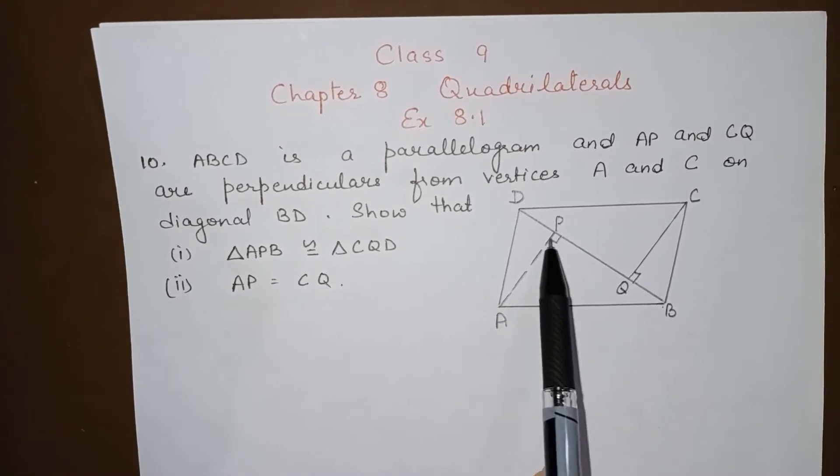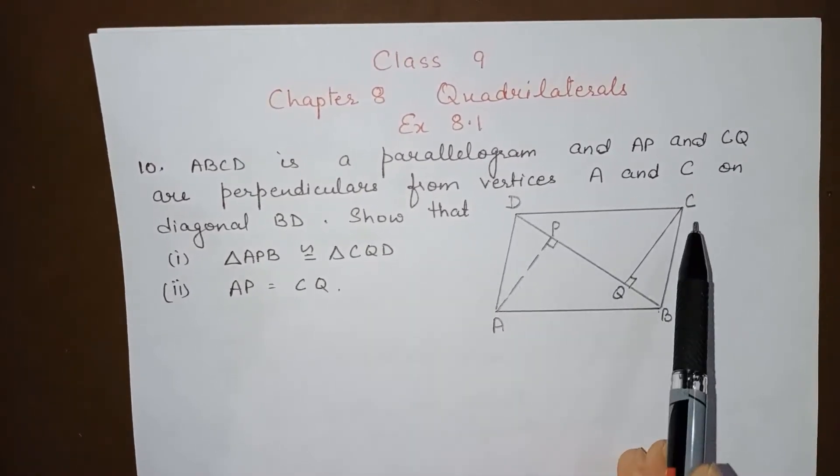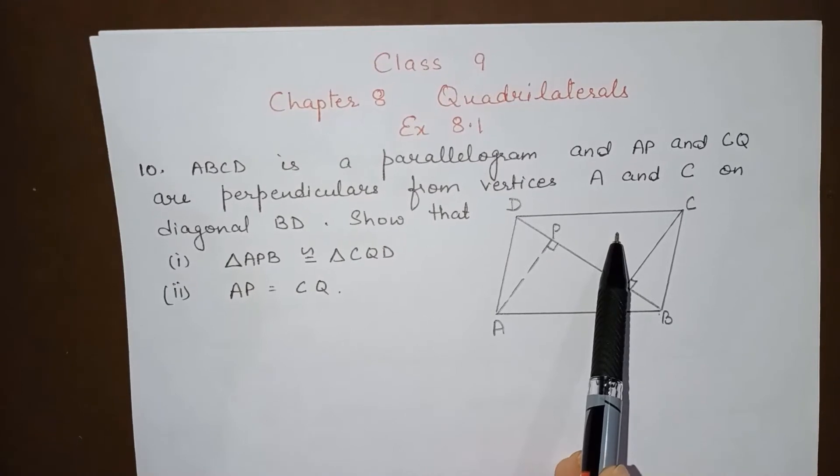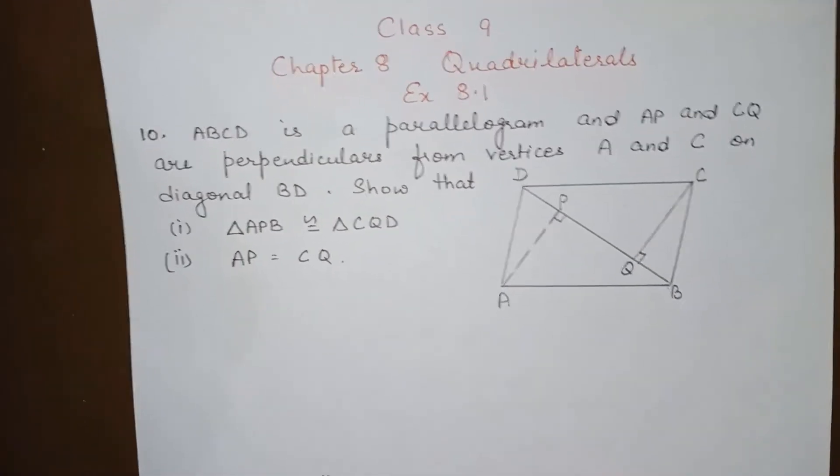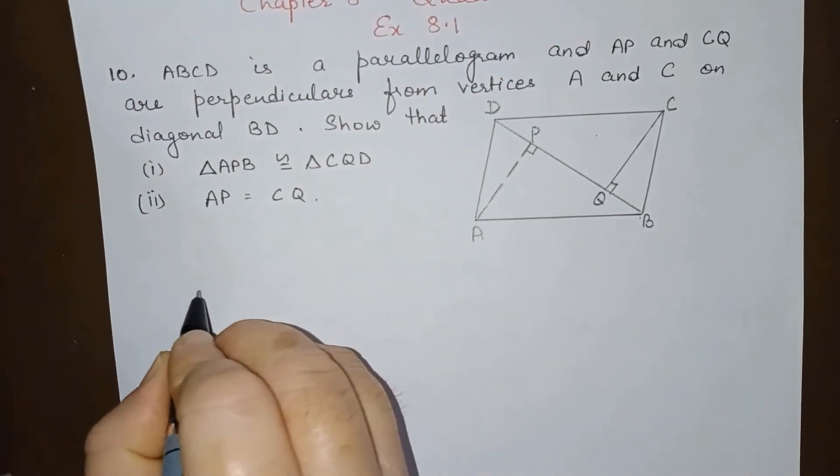This triangle APB and triangle CQD, they are congruent. And then we have to prove that AP is equal to CQ. So let us start, this is a very simple question.